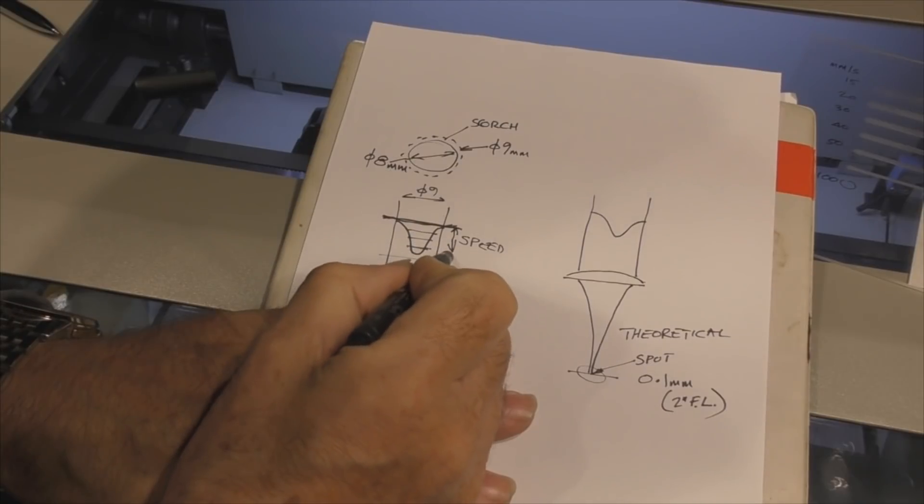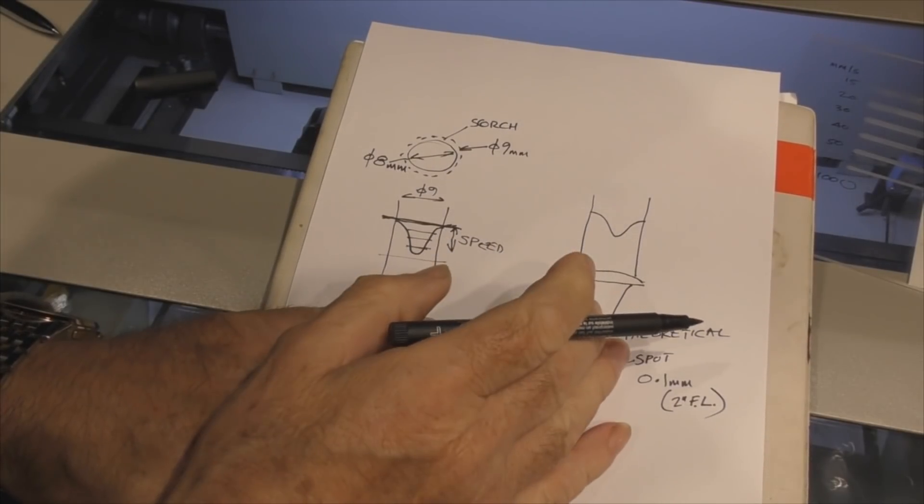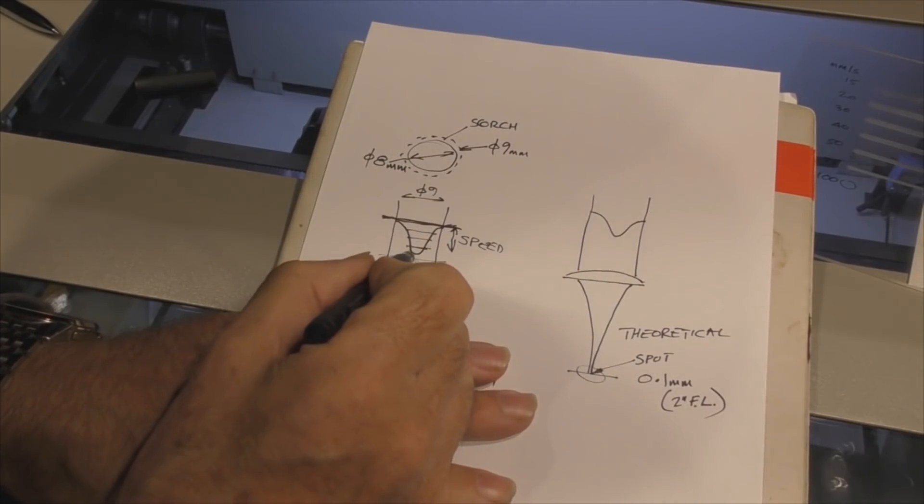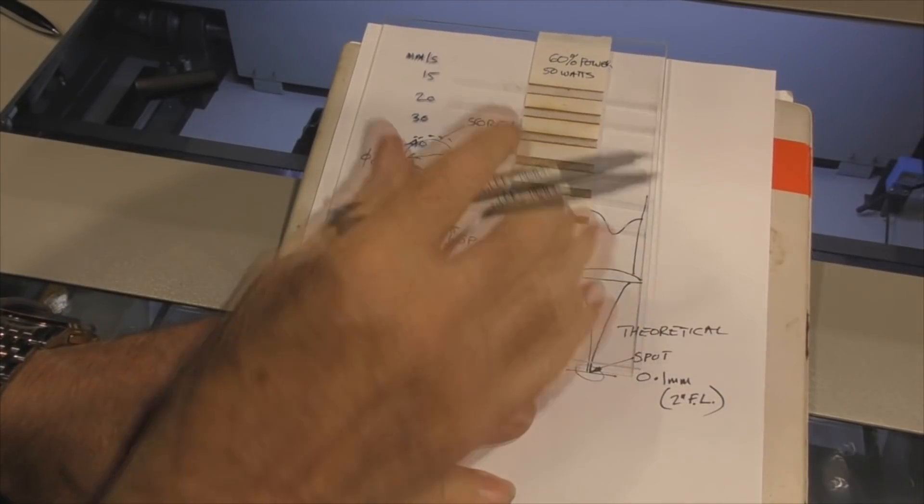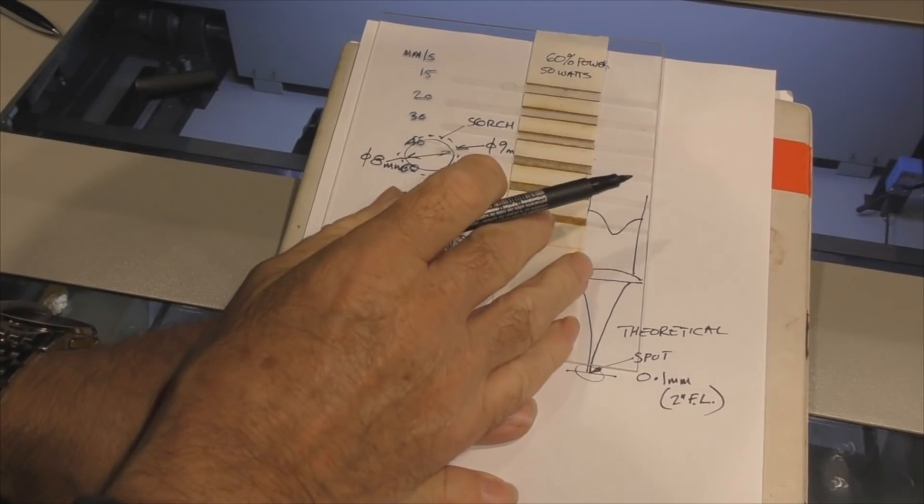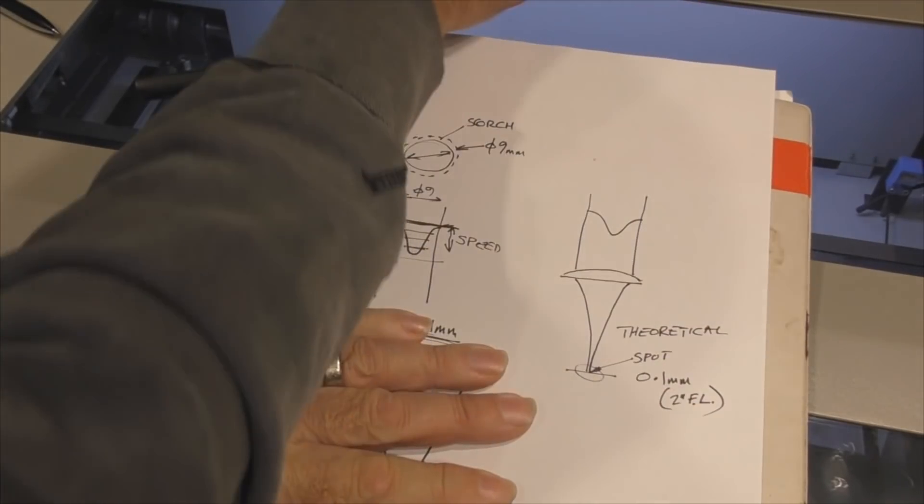And so once we get to a certain critical speed, we drop off the end of the profile and we can't even use the energy that we've got to mark the material, because the material damage threshold exceeds the energy density of the beam itself. But the reason why I've done this without the lens is because when we put the lens in, I'm asking the question, what is it that actually happens?